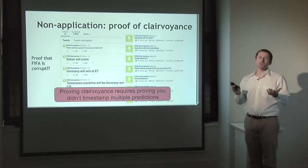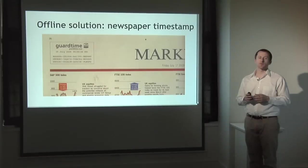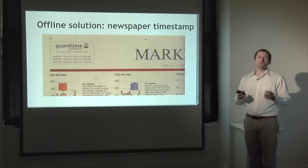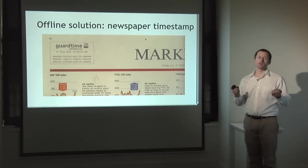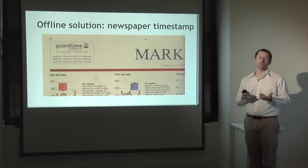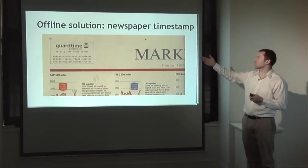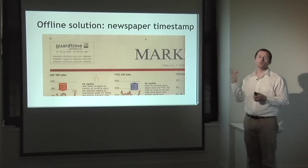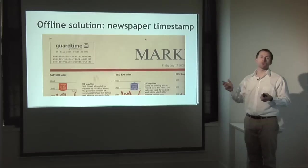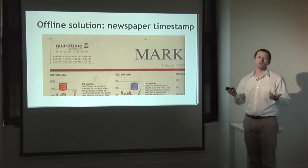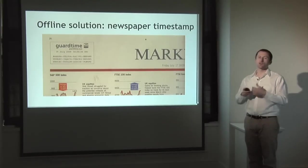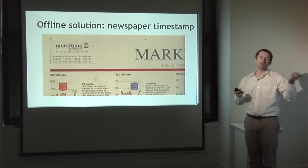So you can't use secure timestamping to prove you can tell the future — it would be interesting if you could. Before Bitcoin existed, there was a solution to this problem: publish a hash of predictions in a newspaper or other widely witnessed media. Newspapers get maintained in libraries and cached in various places, so if you put a hash in the classified section, people have high confidence you placed it on the day it was published. For a relatively low cost — just paying the newspaper as if it's an advertisement — you can put the hash of whatever data you want, and later reveal what you committed to.